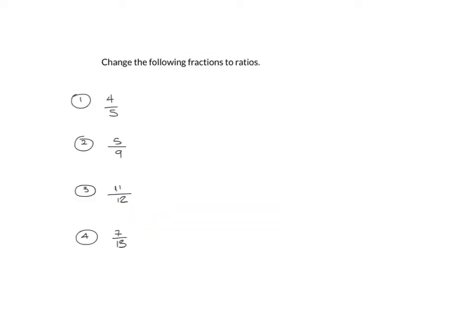So on my next slide here, I've got some fractions. What I want you to do is write it as a ratio with the top number being the first number in the ratio. So it'll be 4 to something, 5 to something, 11 to something, 7 to something, and so on. Pause the video here. Have a go.